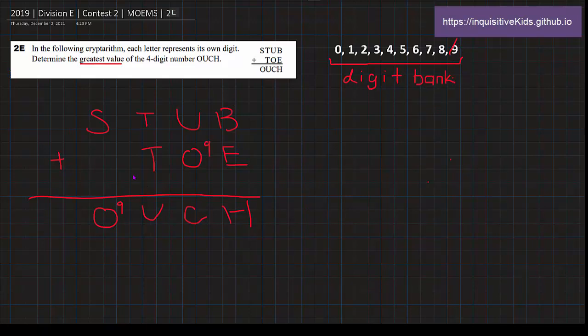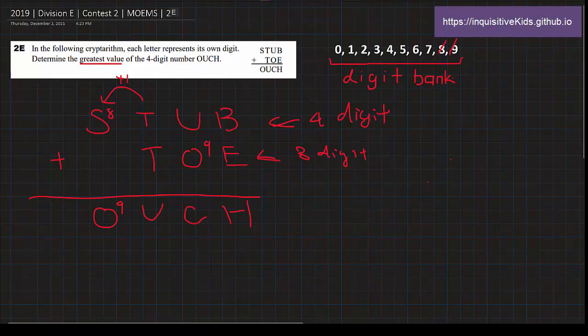Notice that this is a 4-digit number and this is a 3-digit number. If this is 4-digit and these are 3-digit, it means that this will have to have a carry of plus 1. I like to make these arrows that say plus 1 or plus 2 to help me keep track. In this case it's plus 1, and it means that 1 plus S has to equal 9, which means S equals 8. So 8, the next largest digit, is crossed off.